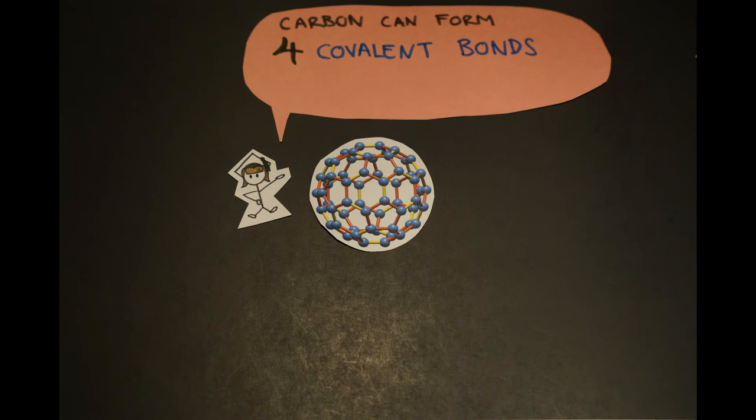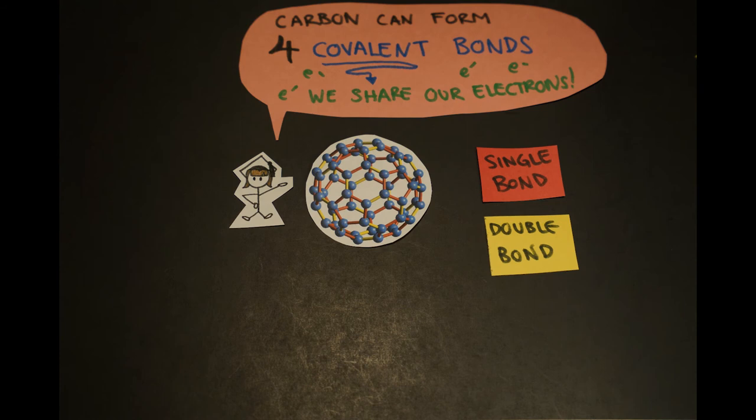Finally, they built the model! Carbon can form four covalent bonds. They found that if they made a polygon out of pentagons and hexagons, it formed a stable structure with all four potential bonds of carbon used up. It looked like a soccer ball!